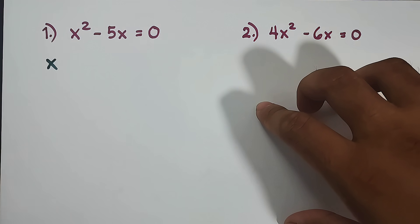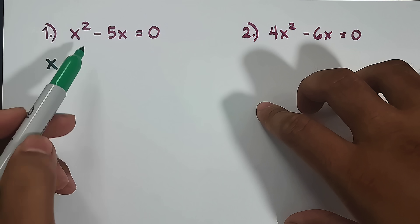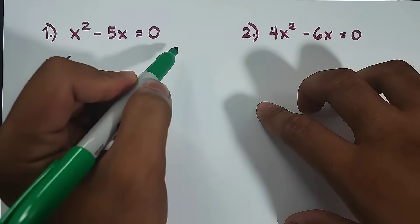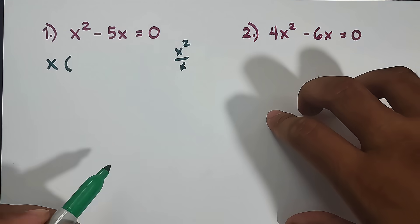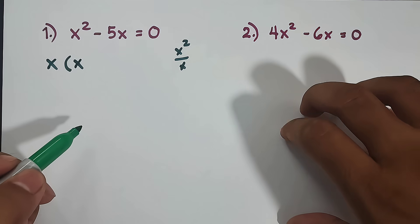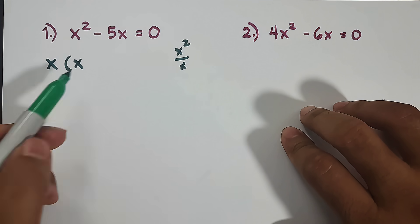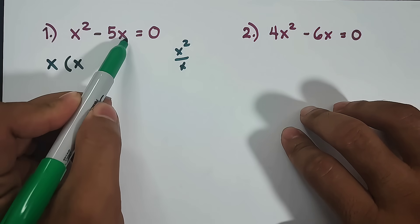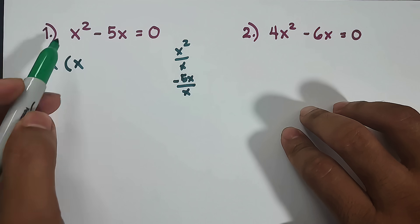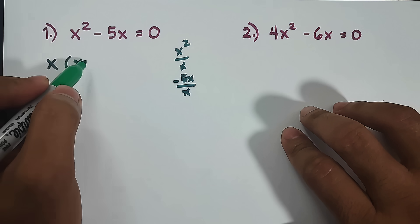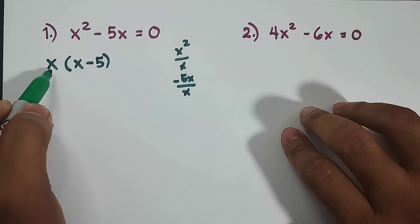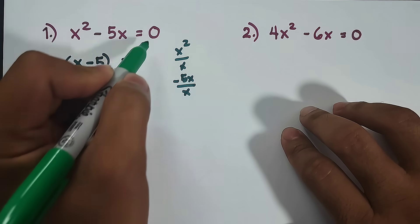After finding the GCF, to get the other factor, you will divide the first term x squared by x. So x squared over x is simply x — that is the first term of the second factor. To get the next term, you will divide negative 5x by your greatest common factor which is x. Negative 5x divided by x is negative 5. So what we have now are the factors: x times (x minus 5) equals 0.